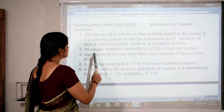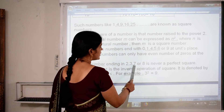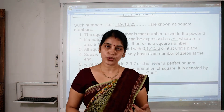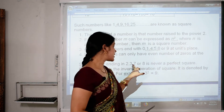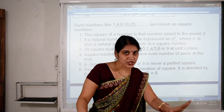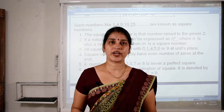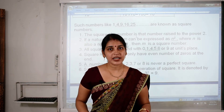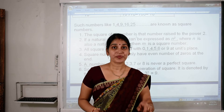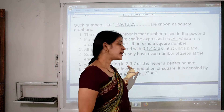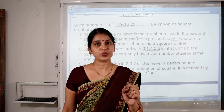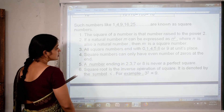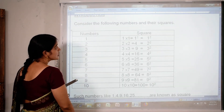A number ending with 2, 3, 7, or 8 is not a perfect square. For example, is 32 a square number? No, because its unit place digit is 2, so it is not a perfect square.